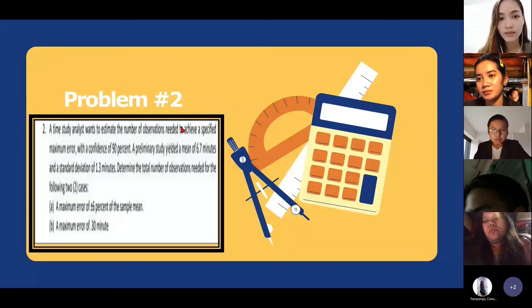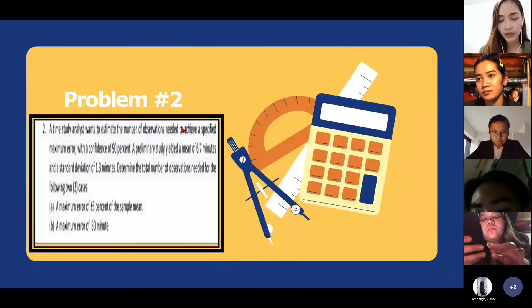Determine the total number of observations needed for the following: first one is the maximum error of positive-negative 6% of the sample mean, and the second one is maximum error of 0.30 minutes.